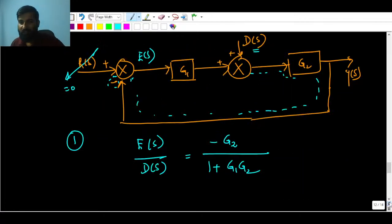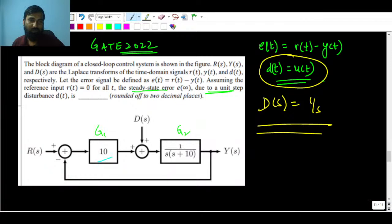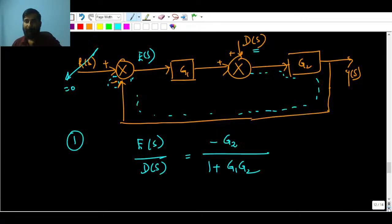You have seen in the question what? This is G1 and this is G2. So this is G1, G1 is 10, G2 is 1/s. This is regular model. We always discuss in the classroom G1 and G2 because of disturbance, what will be the steady state error.